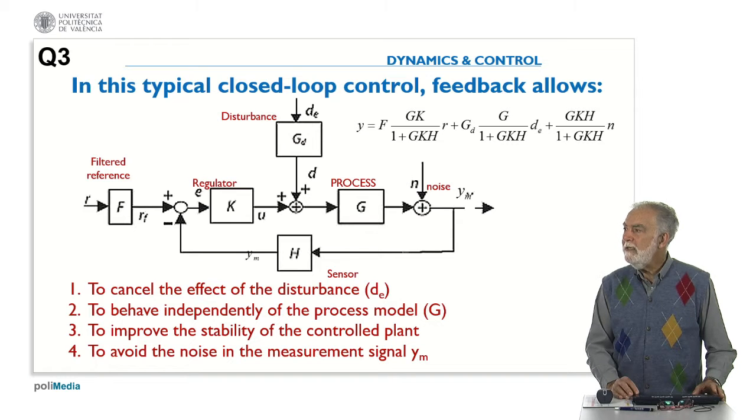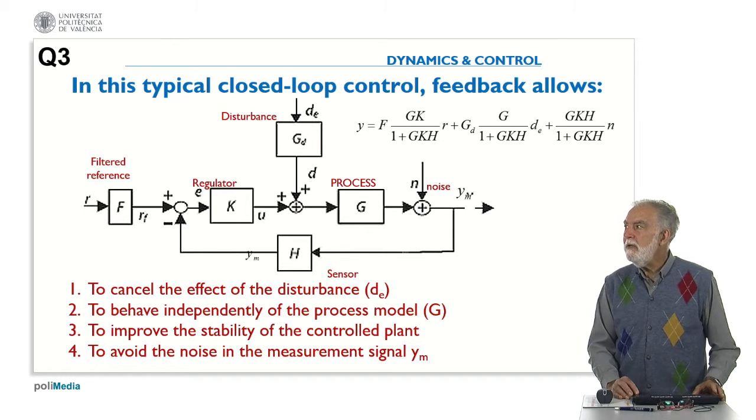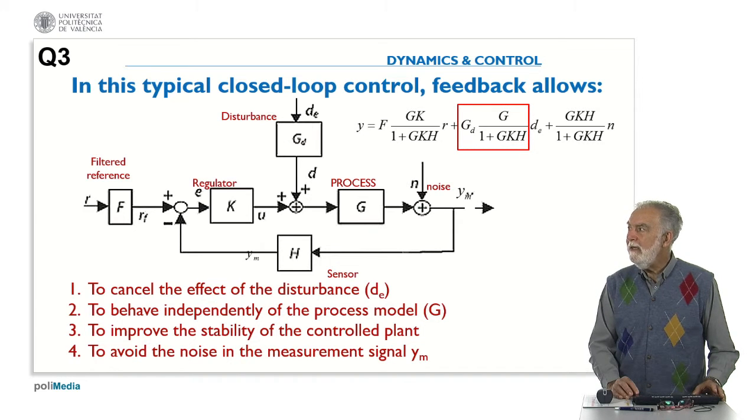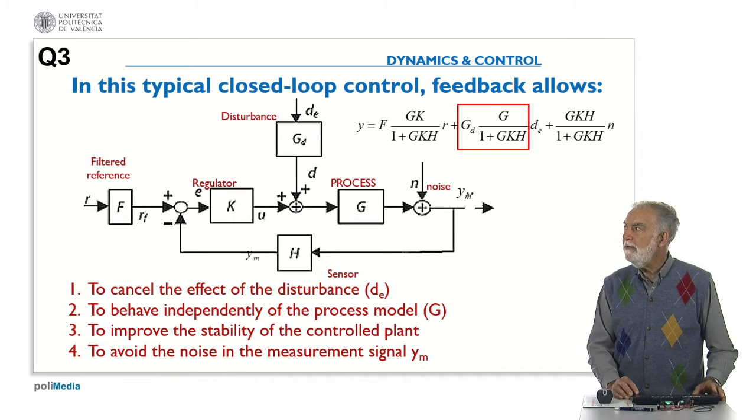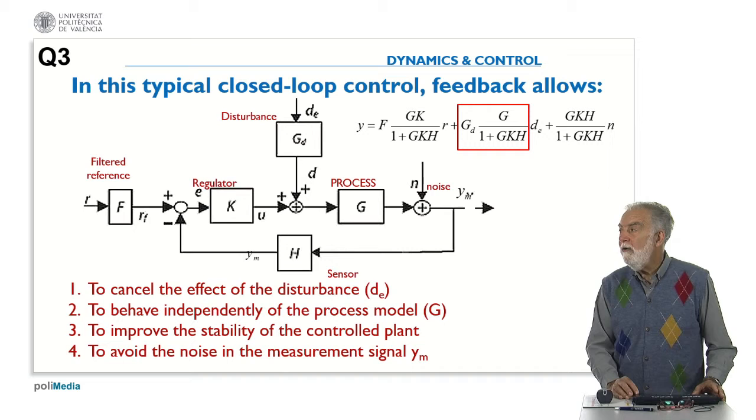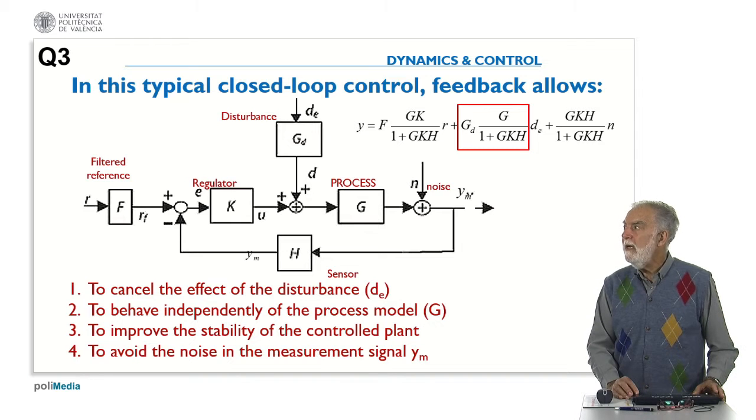And then the first sentence is, feedback allows to cancel the effect of the disturbance. Well this is the output related to the disturbance and as you can see this is not zero. Only in some conditions is zero. So it's not fully canceling the effect of the disturbance. Depends on GD and G and K and so on.